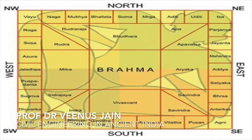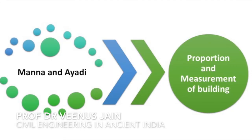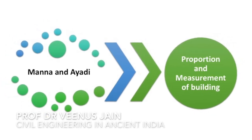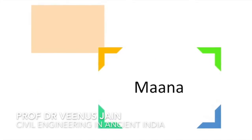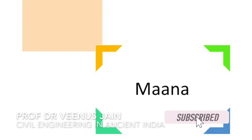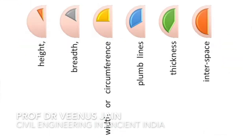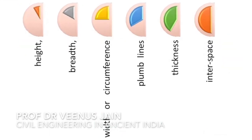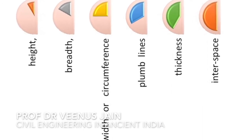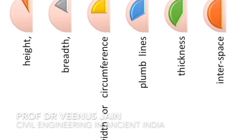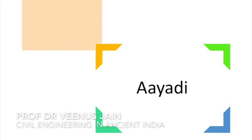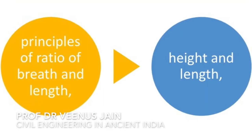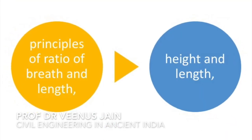The fourth principle is proportion and measurement of building, known as Maan and Ayadi. Maan prescribes the proportionate measurements, which are divided into categories such as measurement of height, breadth, width of circumference, measurement along plumb lines, measurement of thickness and measurement of internal space. Ayadi principles are useful for calculating proportion and scale of different components, principles of ratio of breadth and length, height and length, etc.